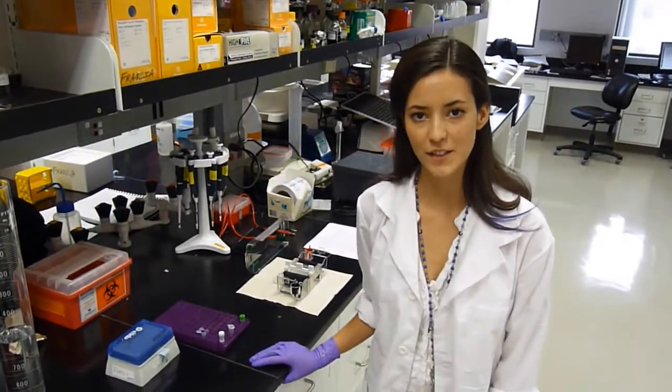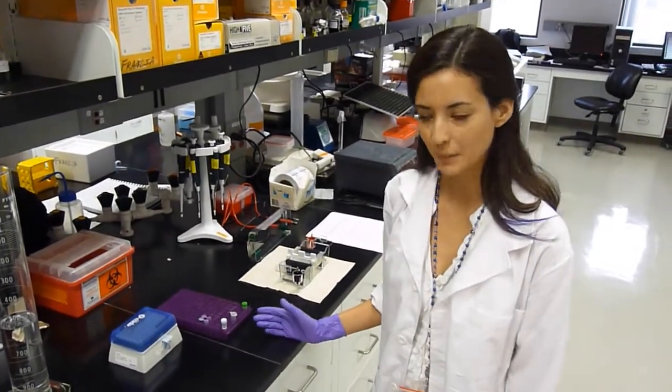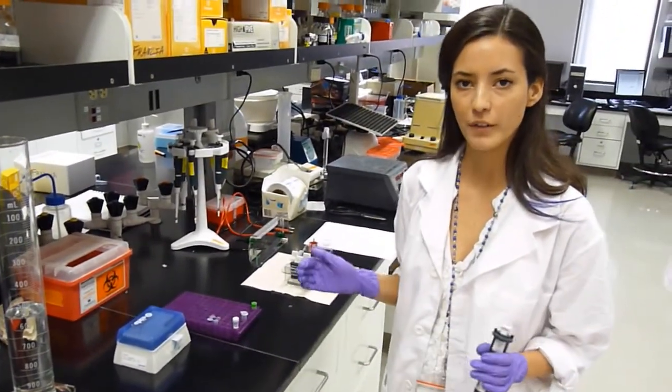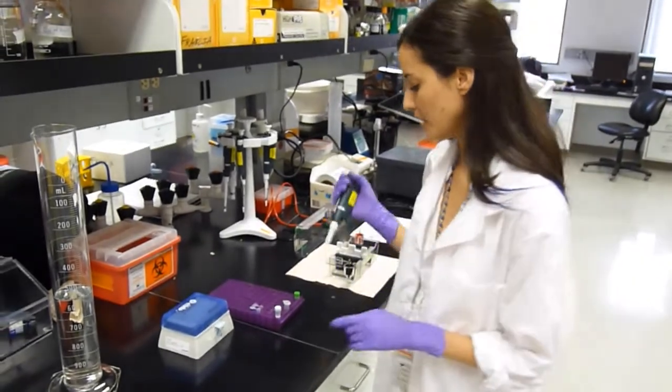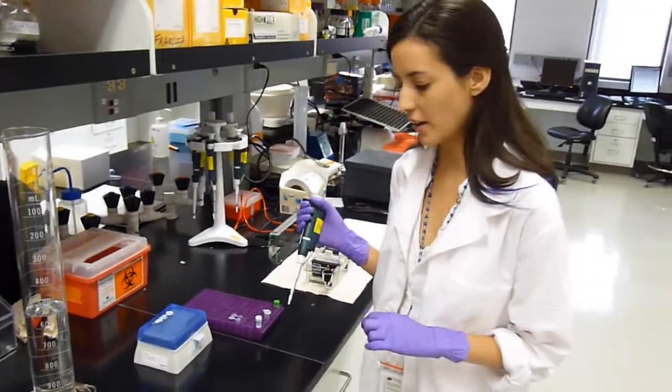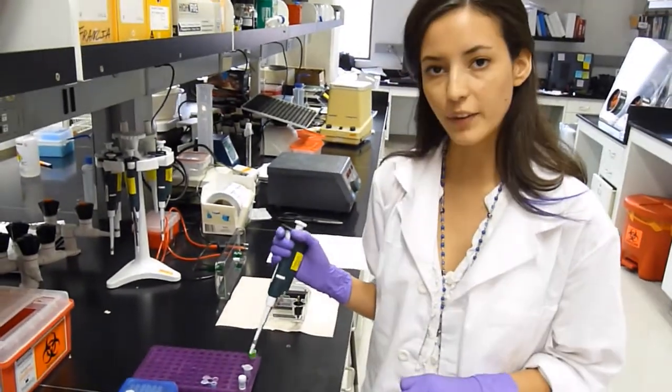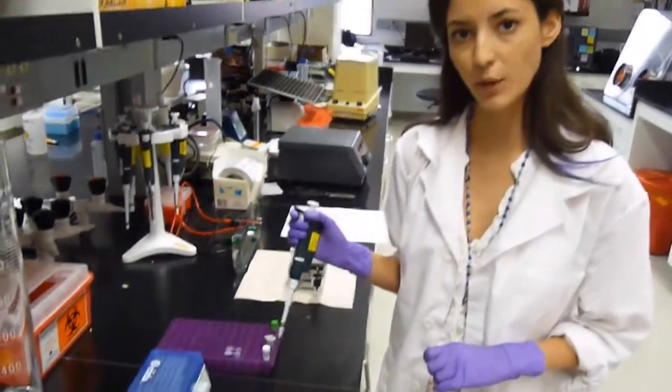While we wait for our gel to set, let's prepare our DNA samples. You want to prepare your samples to a volume that will not overflow your wells. Because we're making a mini gel, I'm going to add 5 microliters of my DNA sample and mix that with 3 microliters of my 10 times loading buffer.